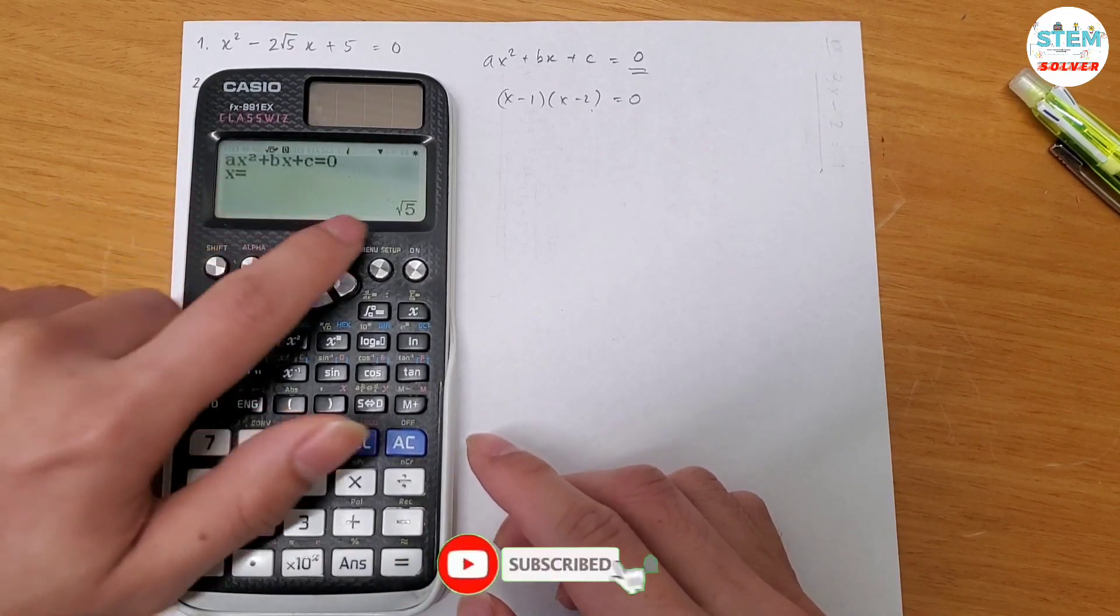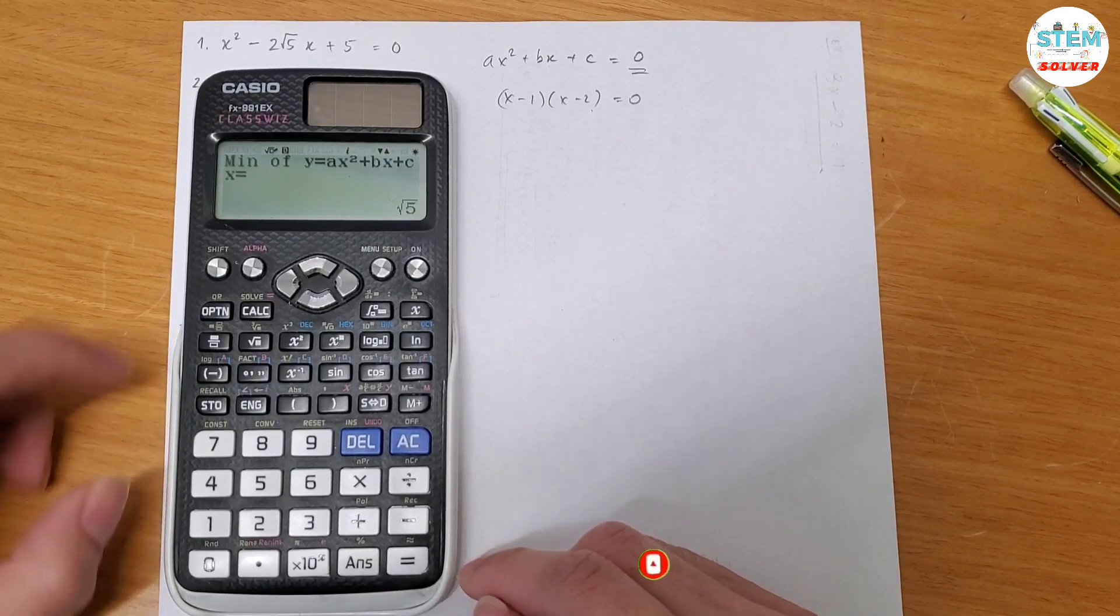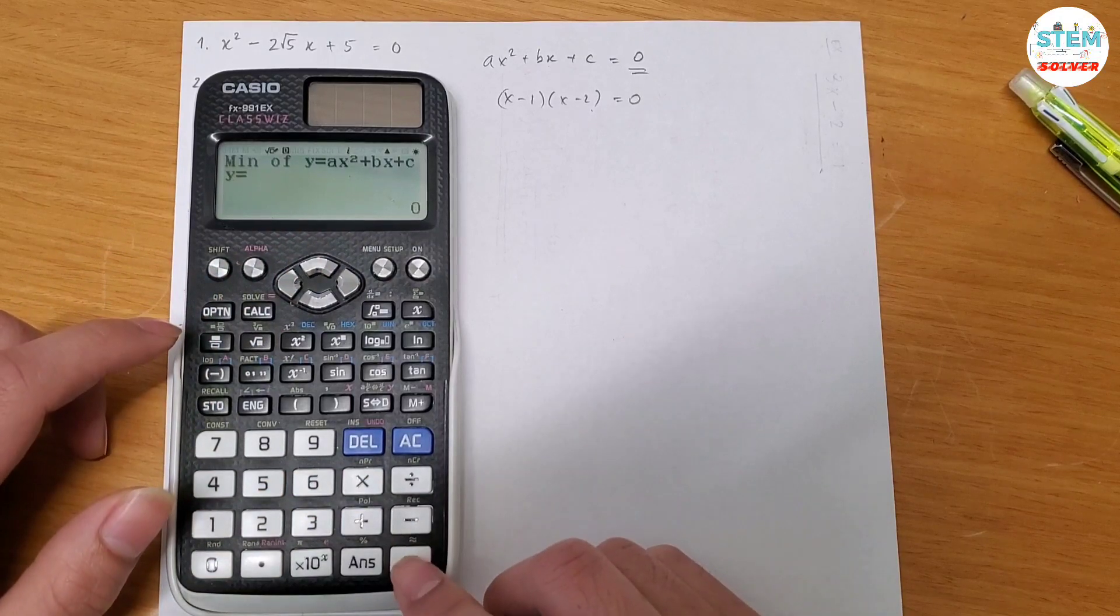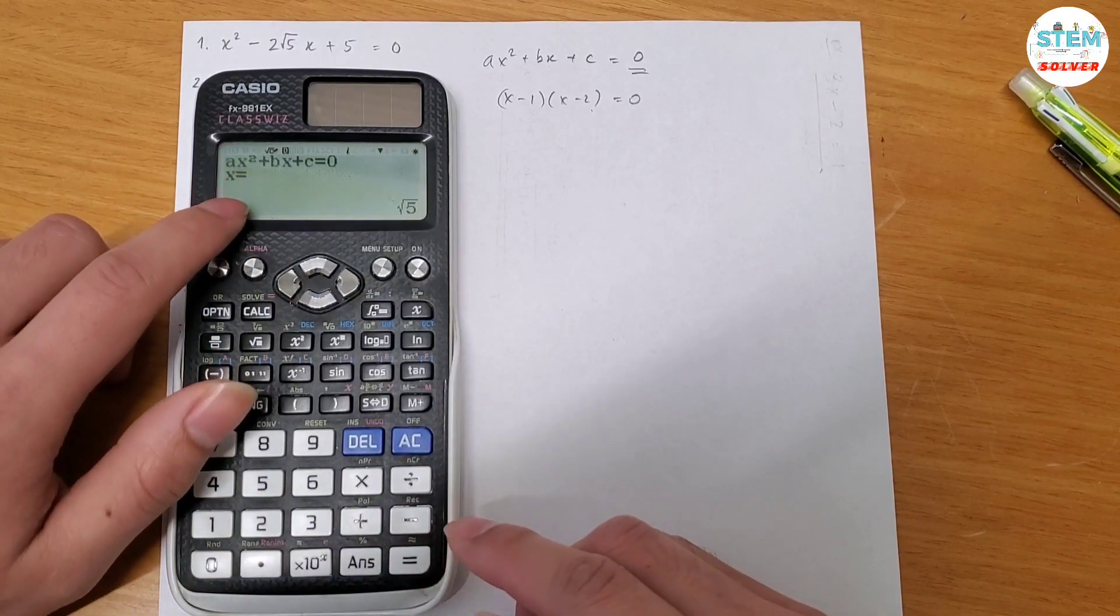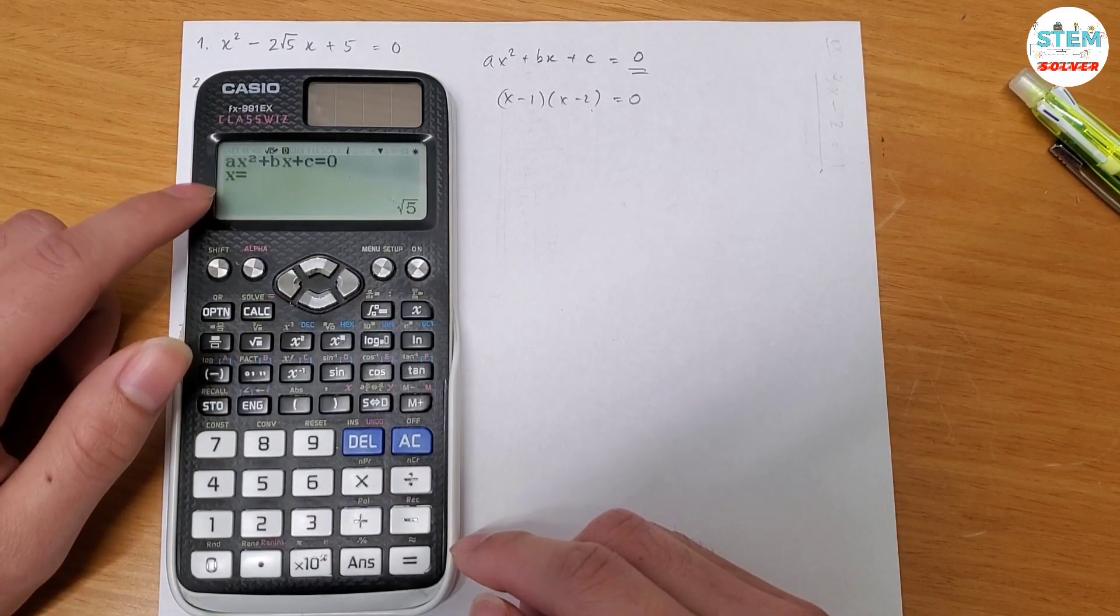So you get x = √5, hit it again to see, to look for the second root, okay? So it says mean of blah blah blah, and hit it again. So in this case, you see x = √5, it means that it has only 1 root.